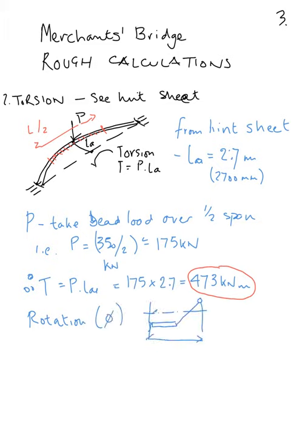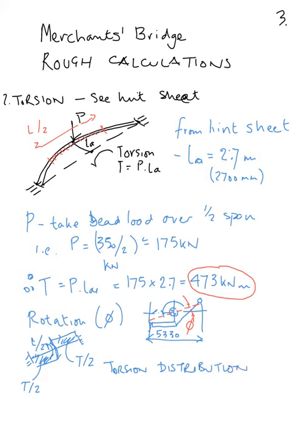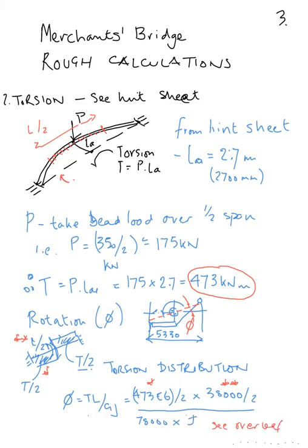We can work out the rotation from this. The rotation comes if you take the centreline of the whole width of the bridge and assume it's rotating about the middle, which is 5.33 metres wide. The torsion distribution is shown in the diagram, which is T over 2 goes to each support, and the length over which it's rotating is L over 2, span over 2.